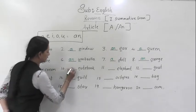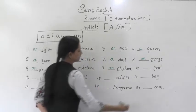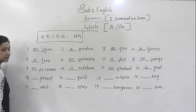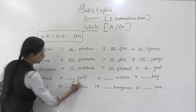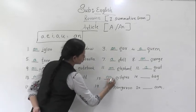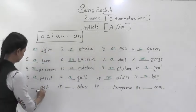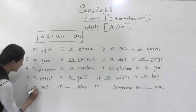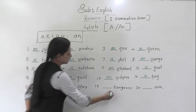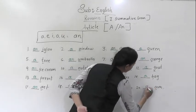Notebook. N is consonant. So, right here a notebook. Elephant. An elephant. Goat. A goat. Parrot. P is consonant. A parrot. Quilt. A quilt. Octopus. An octopus. Bag. A bag. A. An ant. Vowel here. Star. Consonant. A star. Kangaroo. A kangaroo. K is consonant. Arm. Last word. An arm. Understood?